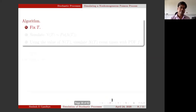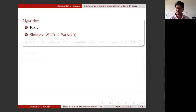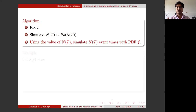So let us give the algorithm. The algorithm is very simple. First, you identify the time point T up to which you need to simulate. Once the time point is identified, you simulate a Poisson random variable with rate Λ(T). Once the value of N(T) is known — that many events you need to simulate — you use the PDF of this process. Using that value of N(T), simulate N(T) event times from the PDF, arrange them in order, and those are the event times of the non-homogeneous Poisson process.